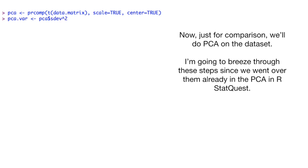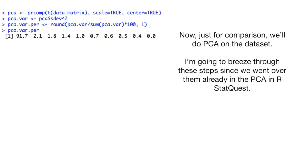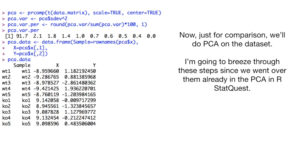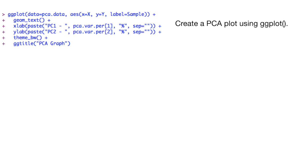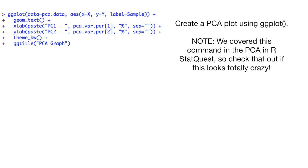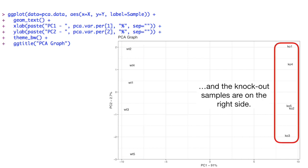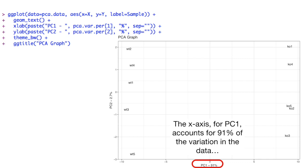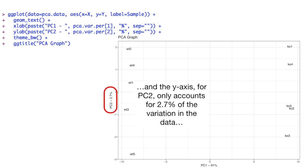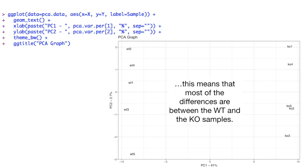Now, just for comparison, we'll do PCA on the dataset. I'm going to breeze through these steps since we went over them already in the PCA and R StatQuest. Now we create a PCA plot using ggplot. Bam! The wild type samples are on the left side of the graph, and the knockout samples are on the right side. The x-axis, PC1, or the first principal component, accounts for 91% of the variation in the data, and the y-axis, PC2, only accounts for 2.7% of the variation in the data. This means that most of the differences were between the wild type and the knockout samples.